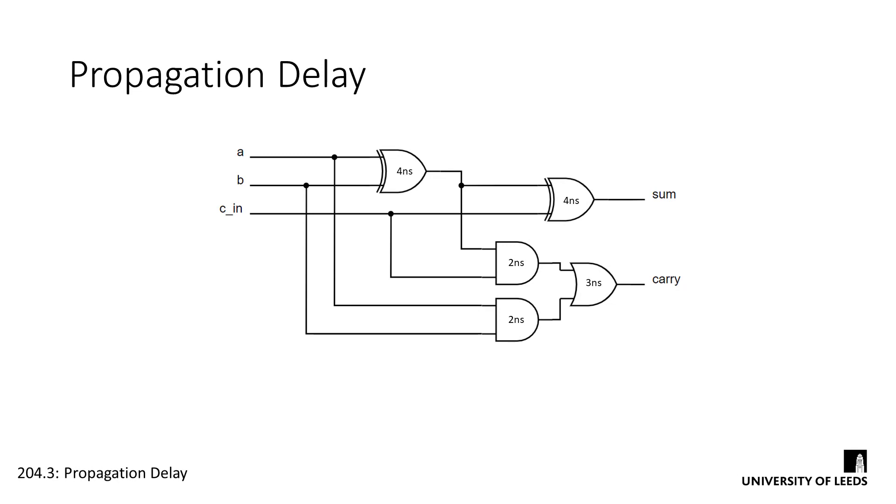So we can now determine the propagation delay of a circuit, but what does this value actually affect? The propagation delay of a circuit determines the maximum frequency at which it can operate. If there's a certain amount of time required before a circuit's output can be deemed as valid, then we'll need to wait for that amount of time before we actually read its output.